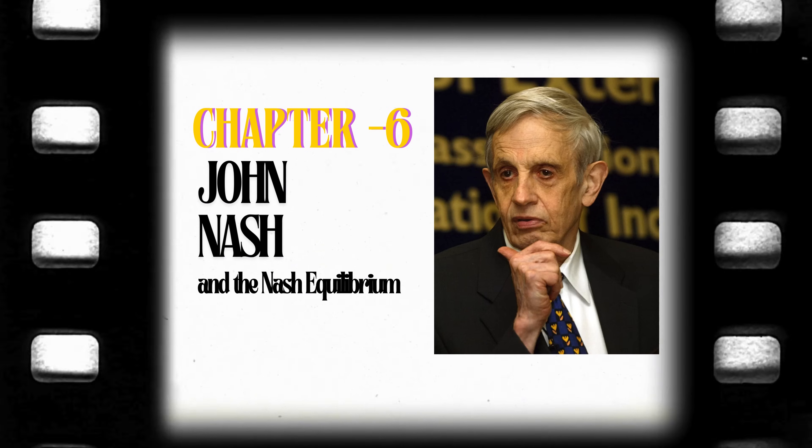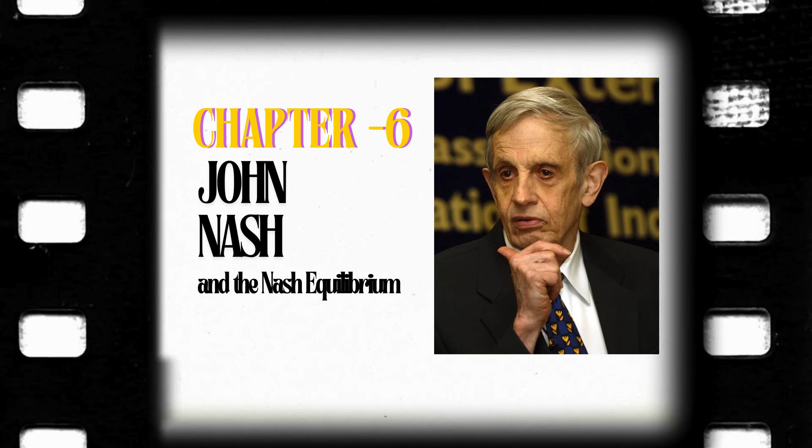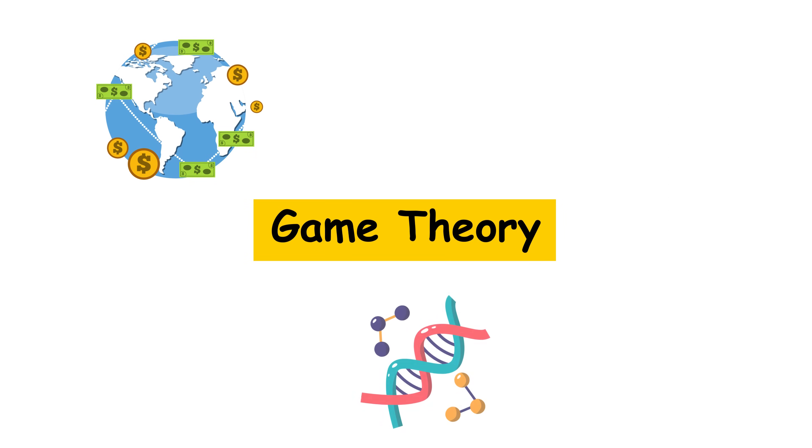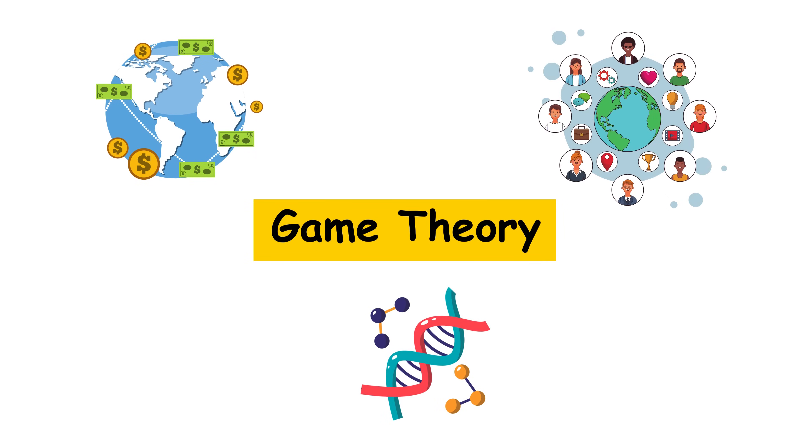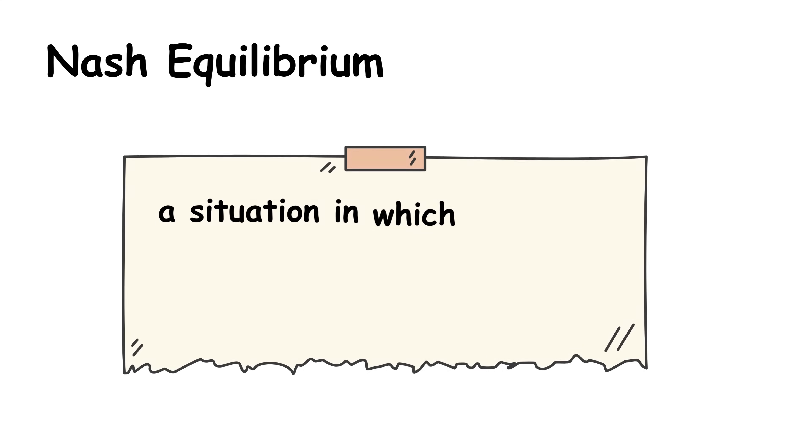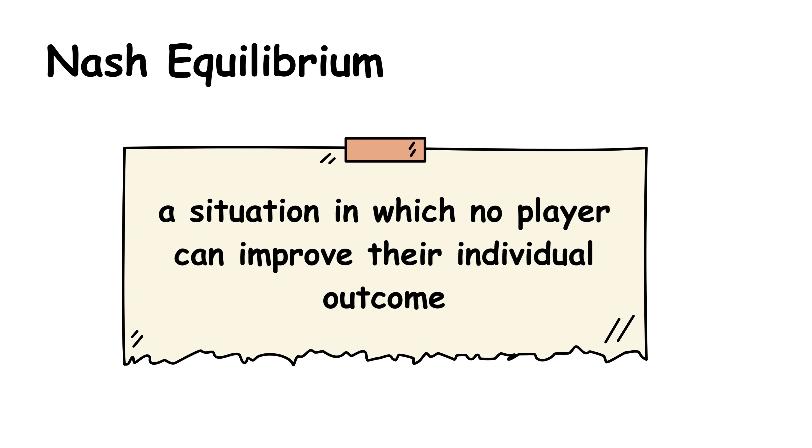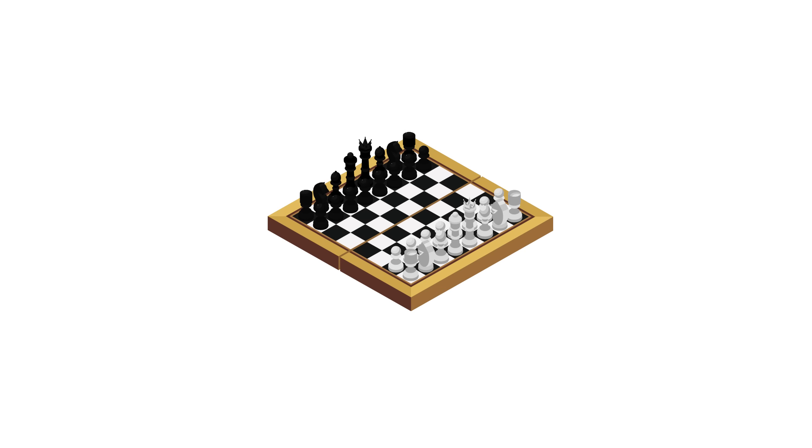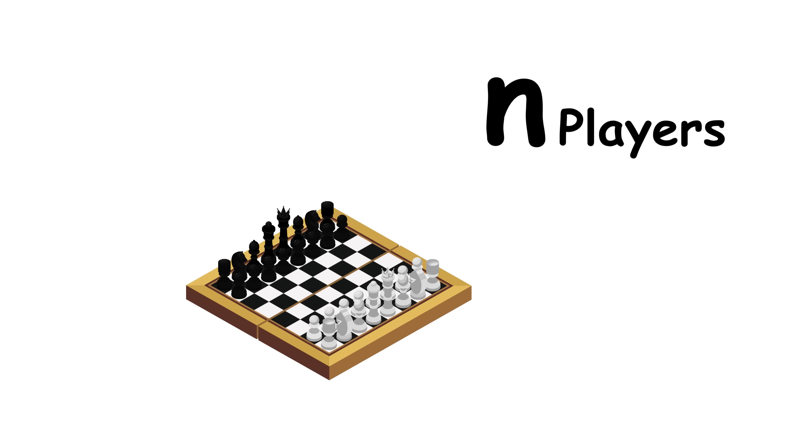John Nash and the Nash Equilibrium. In the 1950s, John Nash revolutionized game theory with a concept that changed economics, biology, and the social sciences. The Nash Equilibrium, which describes a situation in which no player can improve their individual outcome if the others maintain their strategies. Formally, in a game with N players, a strategy profile S1, S2, and so on, is a Nash Equilibrium if, for each player I,